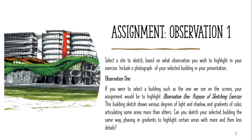This image shows various degrees of light and shadow and gradients of color, articulating some areas more than others. The assignment is to sketch the selected building in the same way — using gradients to highlight certain areas more than others, with less detail in some parts. The condition is to place a photograph of the real-life building side by side with what you are sketching.